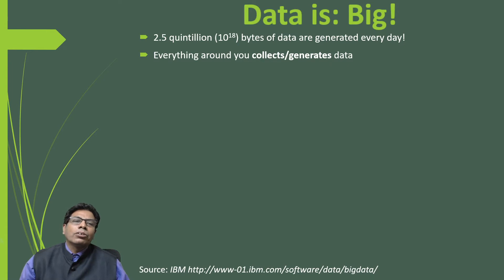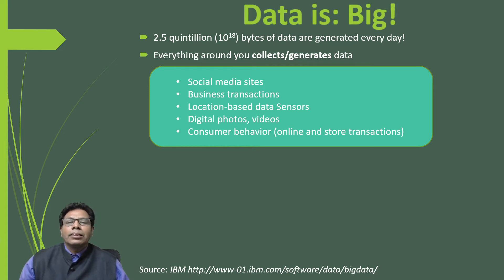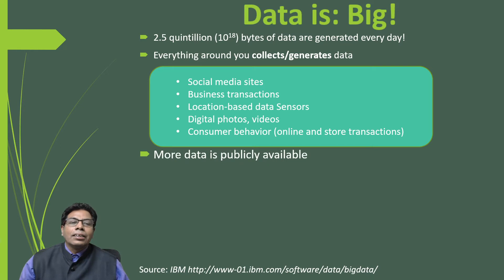Everything around you collects or generates data — social media sites, business transactions, location-based data, sensors, digital photos and videos, consumer behavior, and online and in-store transactions. All these things generate a vast volume of data. This data is publicly available because social media sites are publicly available.